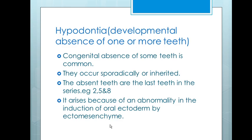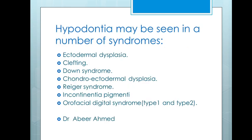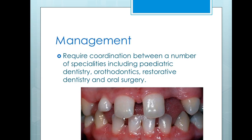Hypodontia may be seen in a number of syndromes. Patients presenting with these syndromes may have one or more teeth absent. Examples include ectodermal dysplasia, clefting, Down syndrome, chondroectodermal dysplasia, Rieger's syndrome, incontinentia pigmenti, and orofaciodigital syndrome types one and two.